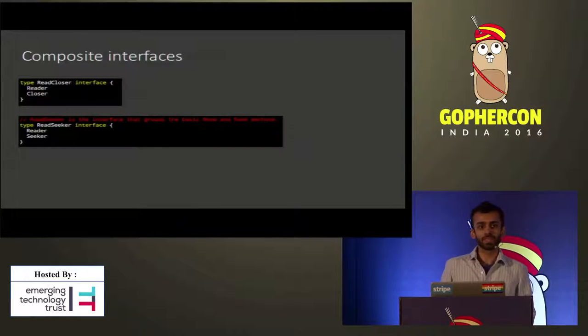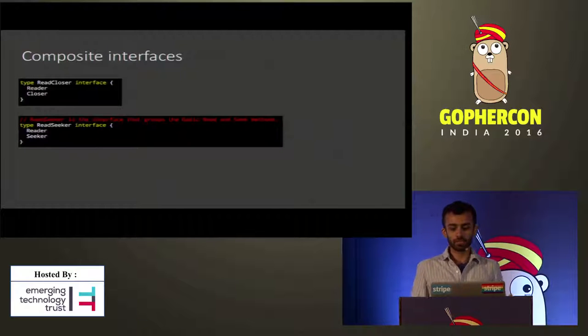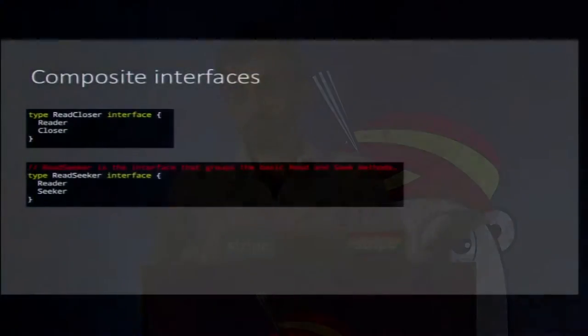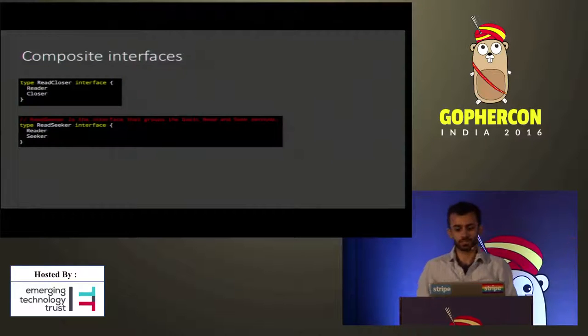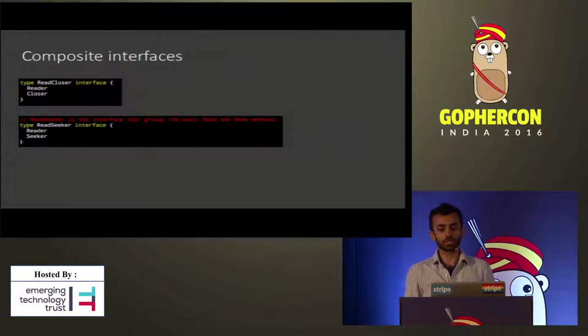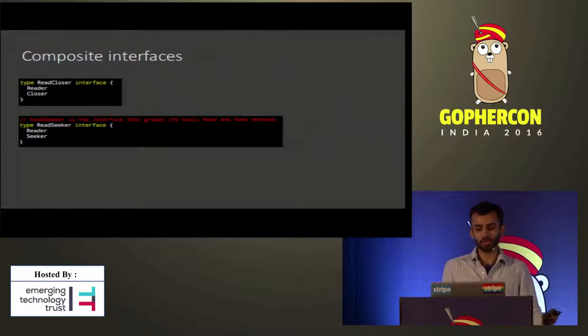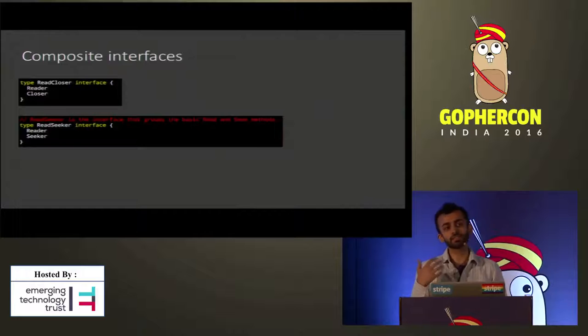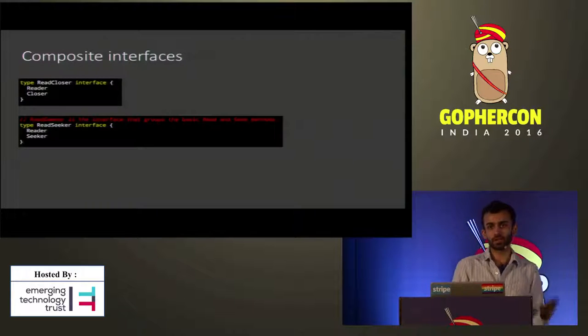We can also combine two or more interfaces. A ReadCloser is anything that is both a Reader and a Closer. A ReadSeeker is anything that's both a Reader and a Seeker. Seek basically allows you to jump to, say, the 50th byte from the beginning or end of a file — and it can be any data source which allows arbitrary access. By combining small, single-method interfaces like this, we get precision. Not all readers have to support close and seek operations, but if we're writing a function that needs to both read and seek, we can specify that without requiring every type that provides read to also provide seek and close.